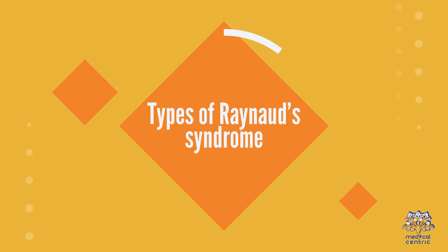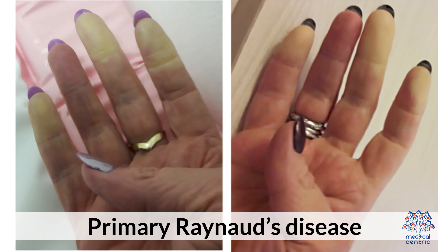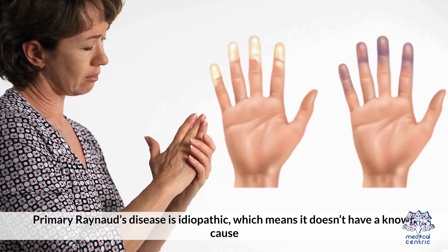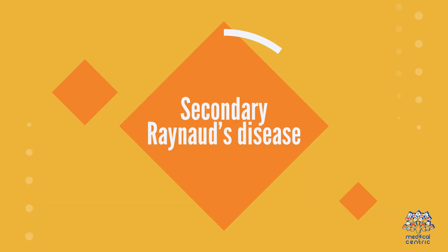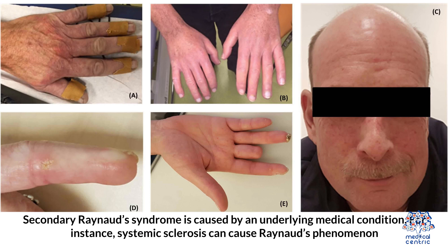Types of Raynaud's Syndrome. Primary Raynaud's Disease is idiopathic, which means it doesn't have a known cause. Secondary Raynaud's Syndrome is caused by an underlying medical condition — for instance, systemic sclerosis can cause Raynaud's Phenomenon.